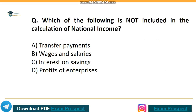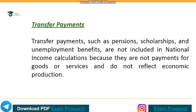Which of the following is not included in the calculation of national income? Correct answer: option A, transfer payments. Transfer payments such as pensions, scholarships, and unemployment benefits are not included in national income calculations because they are not payments for goods or services and do not reflect economic production.